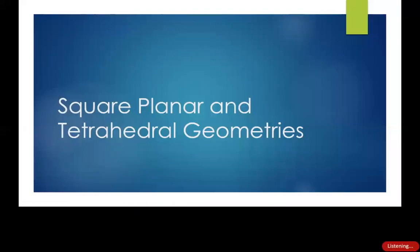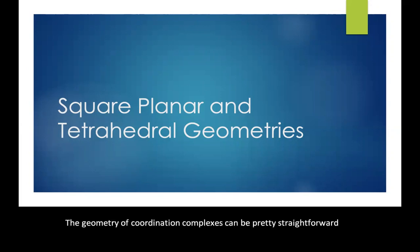The geometry of coordination complexes can be pretty straightforward. For instance, if we've got six ligands in a transition metal complex, the geometry of that complex will be octahedral. That's a very common geometry.